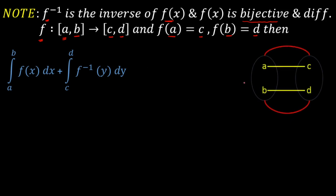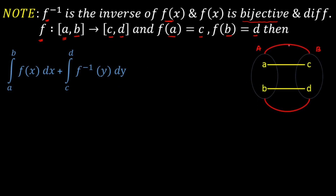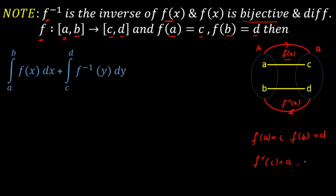f(x) is defined from set A to set B, and f inverse is defined from set B to set A. For f(x), A is the domain and B is the range. Since it is bijective, range equals co-domain. We have f(a) = c and f(b) = d. For the inverse, f⁻¹(c) = a and f⁻¹(d) = b.